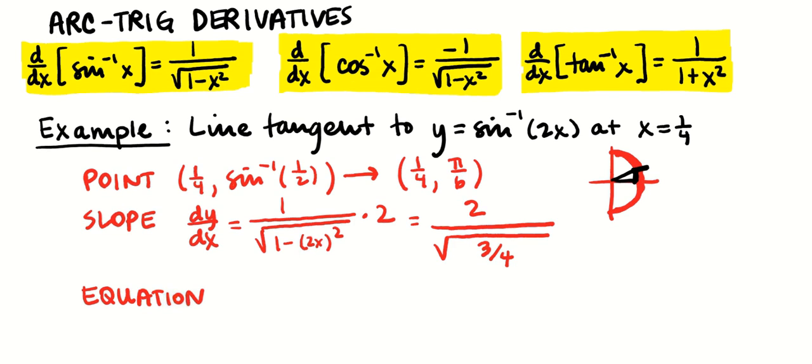That'll be y minus pi over 6 equals 2 over the square root of three fourths times x minus one fourth. And that's an equation for the tangent line.